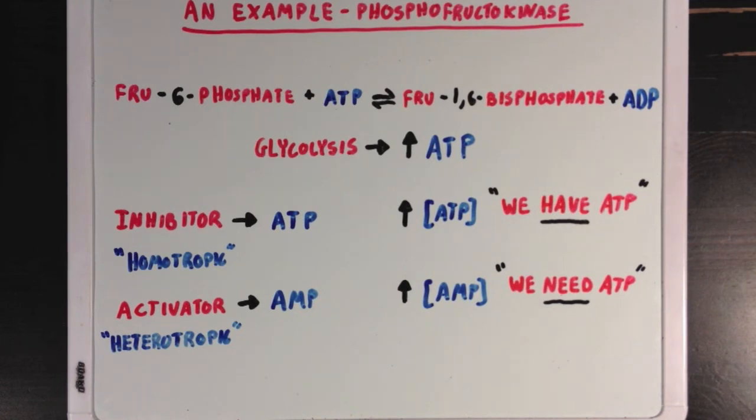The final point I want to make is that specific reactions make excellent control points for long, multi-step processes. Remember that glycolysis is a 10-step sequence. So why is there so much regulation going on for this one step?